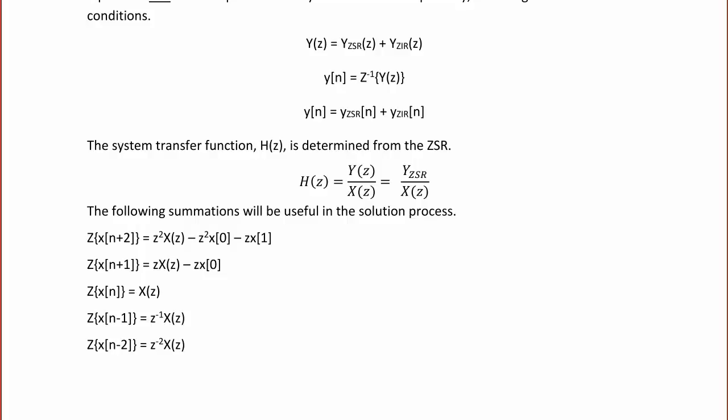The following summations will be useful in solving difference equations with initial conditions. The Z transform of x(N+2) is Z² X(Z) − Z² x(0) − Z x(1). Note that capital X is the Z domain and lowercase x represents the N domain, so x(0) is N=0 and x(1) is N=1. The Z transform of x(N+1) is Z X(Z) − Z x(0). And the Z transform of x(N) is simply X(Z).